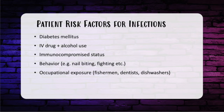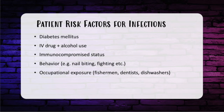What are some clues that place patients at risk for infection, and what are the key words we should look out for on the question stem? There's quite a bit: diabetes, IV drug use, alcohol abuse, immunocompromised states — encompassing a wide spectrum from HIV/AIDS to malnutrition, transplant, and renal failure patients — certain behaviors like nail biting, fighting, occupational exposure such as fishermen, dentists, nail salon workers, and dishwashers.